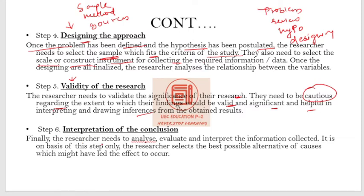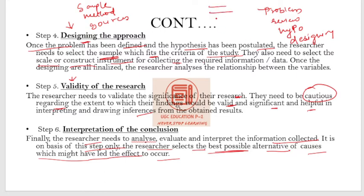The last step is interpretation. Finally, the researcher needs to analyze, evaluate, and interpret the information collected. On the basis of this step, the researcher selects the best possible alternatives of causes which might have led the effects to occur. So the six steps are: statement of the problem, review of literature, hypothesis formulation, designing, validity check, and interpretation of the conclusion.